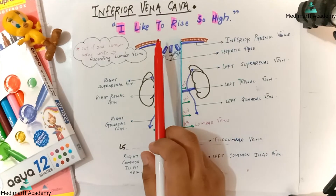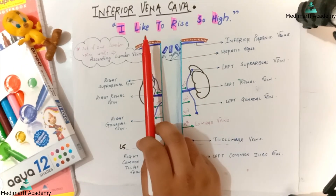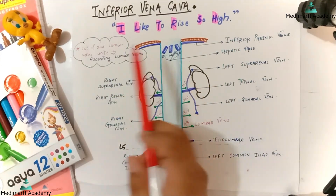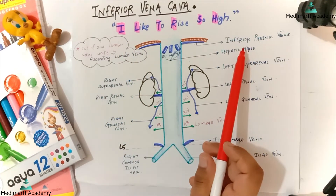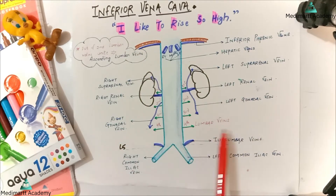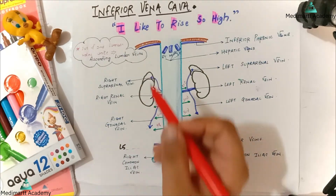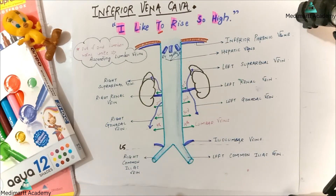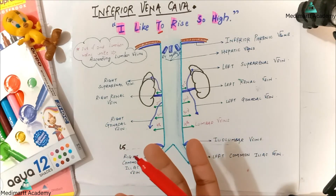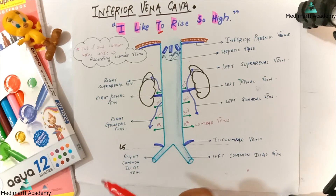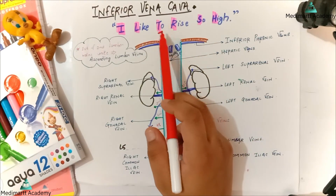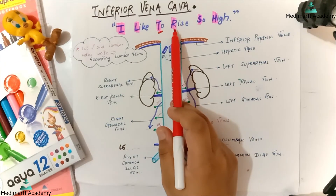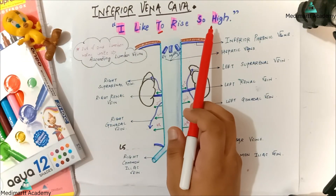There is a mnemonic for the tributaries of the inferior vena cava: 'I like to rise so high.' This is not strictly in order, but you can derive the tributaries from it. I stands for inferior phrenic veins, L for lumbar veins, T for testicular veins — meaning gonadal veins, specifically the right gonadal veins, since gonads in males are the testes and in females the ovaries, so testicular or ovarian veins. R is for renal veins, S is for suprarenal veins, and H is for hepatic veins.